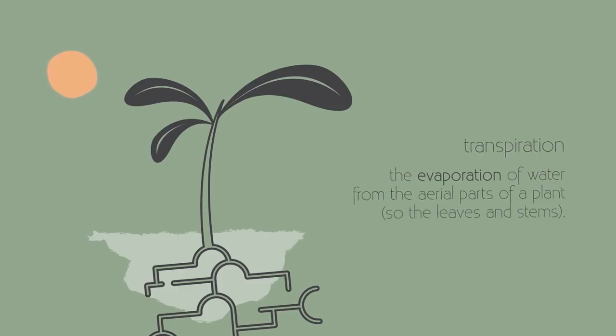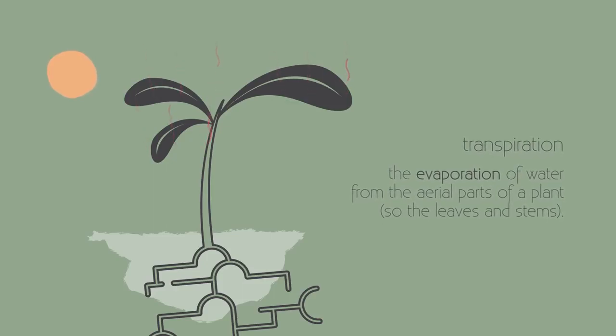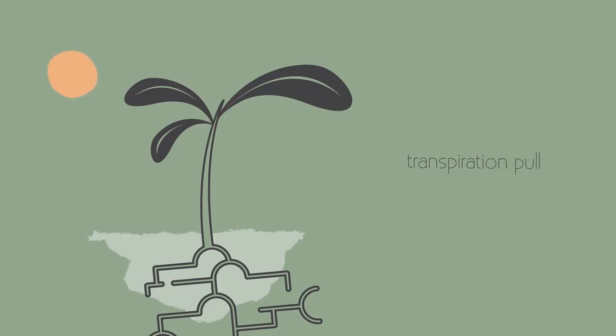Transpiration is the evaporation of water from the aerial parts of the plant, so the leaves and stems. By water evaporating out of these parts, mostly the leaves, a suction pressure is created which draws up the water through the plant. This is called the transpiration pull.